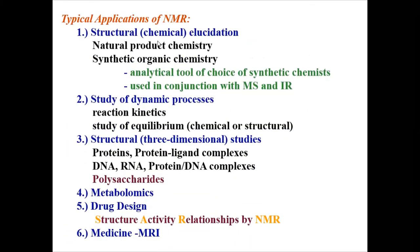The typical applications of NMR spectroscopy include: first, structural chemical elucidation — used in natural product chemistry, synthetic organic chemistry, and as an analytical tool for synthetic chemists. It is required for organic synthesis and used in conjunction with mass spectrometry and IR. If you have IR, mass, and NMR data together, you can easily prove your synthesized compound structure.